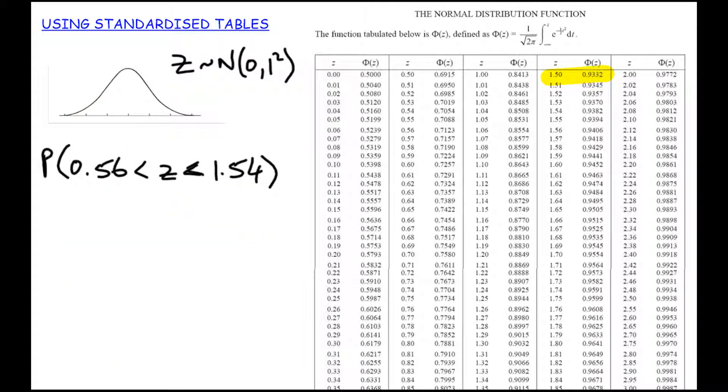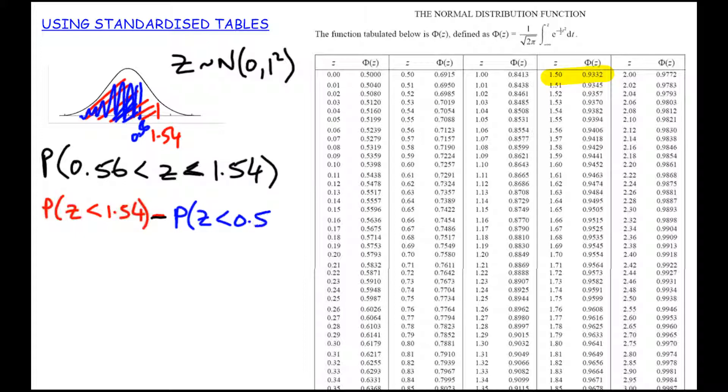The probability that Z exists in between these two values. So if this was my 1.54 and this is my 0.56, I'm trying to find the probability that it exists in between these two values. The standard technique to do this is first I'm going to find this red area here. From there, I'm going to subtract this blue area and that will leave me with the interval that I was looking to find. So that red area is the probability that Z is less than 1.54. And from there, we will subtract the probability that Z is less than 0.56.